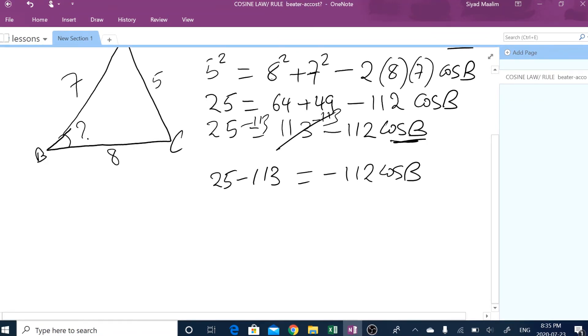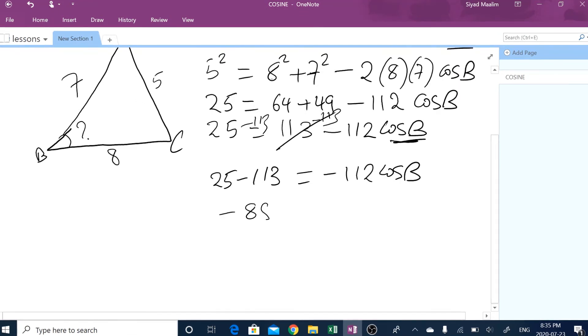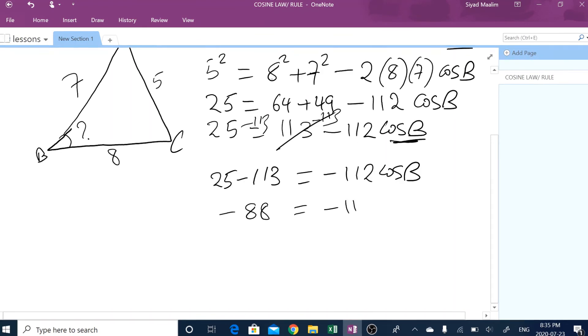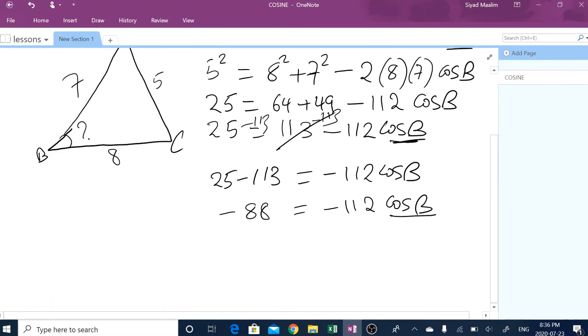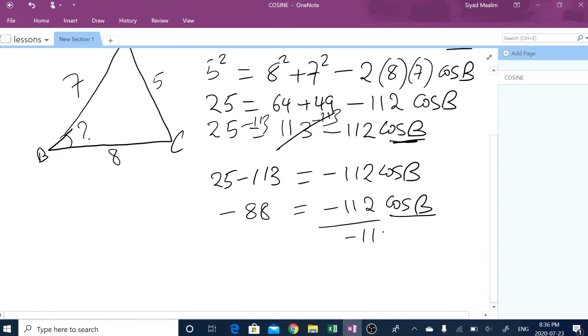So this is, in order to solve for cos B, it's like solving an equation. So what we do is we subtract 113 from both sides of the equation. These two will cancel. 25 minus 113 equals minus 112 cos of B.